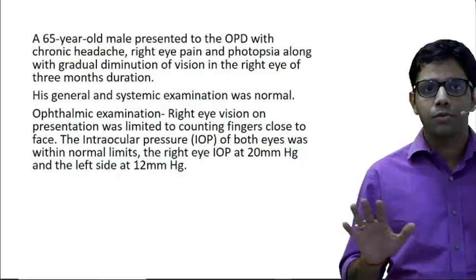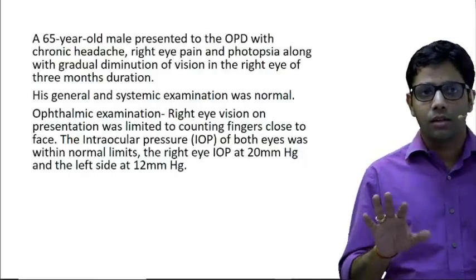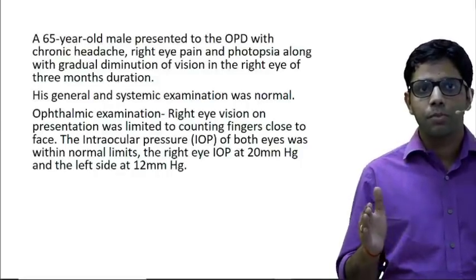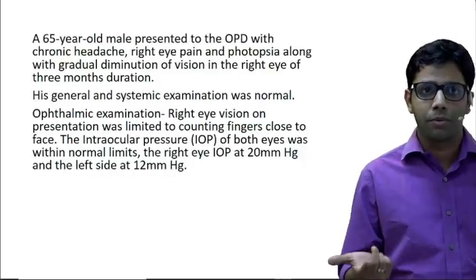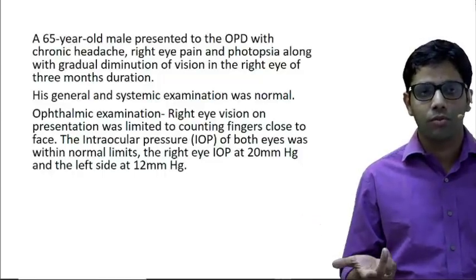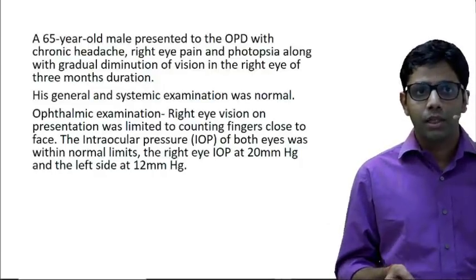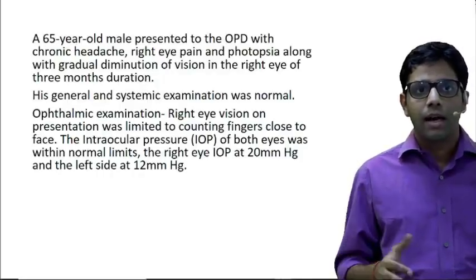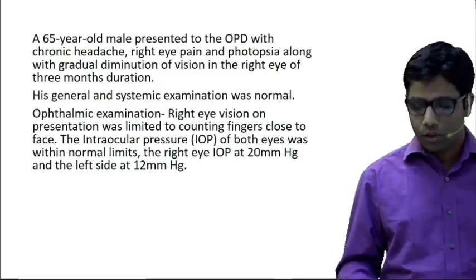There is a 5 mmHg difference between the intraocular pressures of both eyes. Whenever there is such a difference we have to suspect something is going on in the right eye. Although it is below 21 mmHg, the difference is more than 5 mmHg, so we should look carefully. The presenting vision is also less. We would like to do indirect ophthalmoscopy to look at the retina. The anterior segment — cornea, lens — everything is normal, so the next step is indirect ophthalmoscopy.